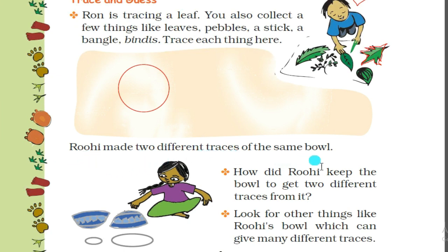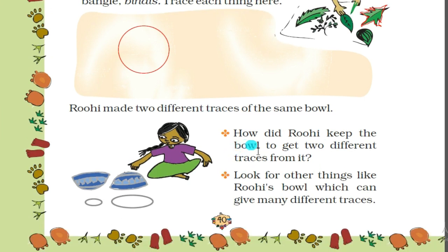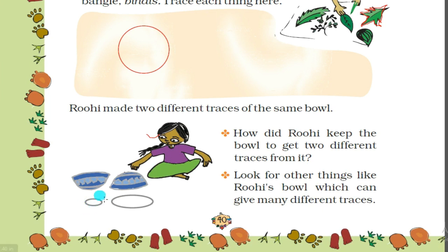Here Ruhi made two different traces of the same ball. How did Ruhi keep the ball to get two different traces from it? Here she traced the downside of the bowl, and here Ruhi traced the open side - the upside of the bowl. So she got a smaller circle and a bigger circle - two different traces from the same bowl.